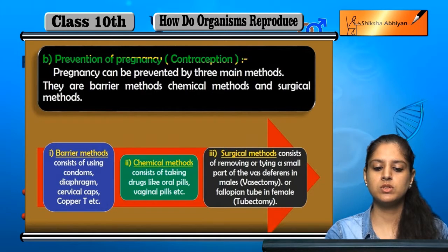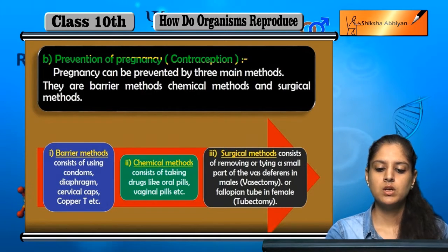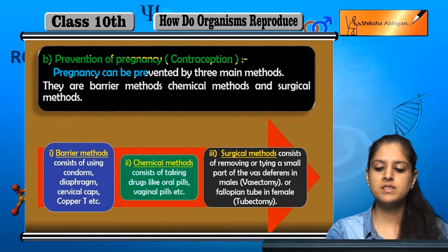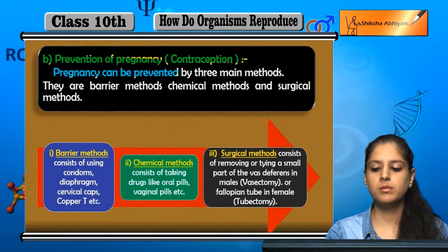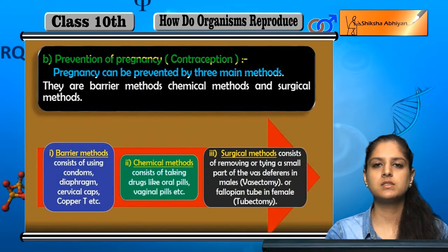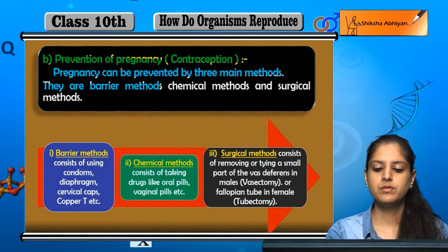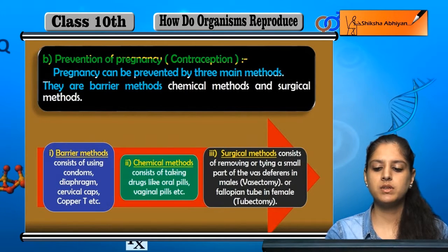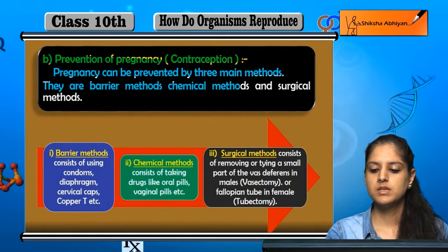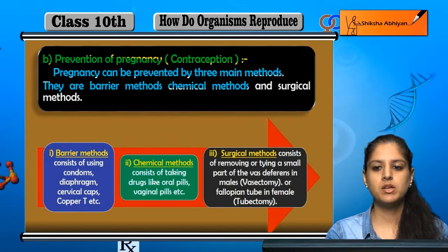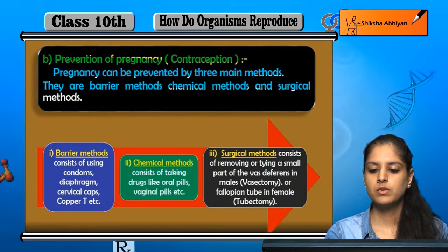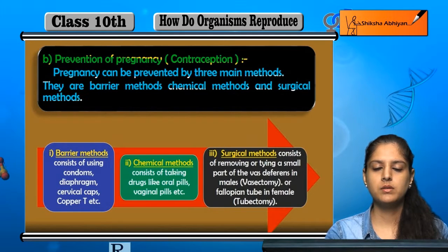Second hai prevention of pregnancy, that is contraception. So pregnancy ko prevent karne ko hum contraception bolte hain. Pregnancy ko prevent hain teen methods se kar sakte hain: first hai barrier method, second hai chemical method, aur third hai surgical method.